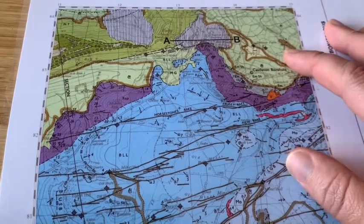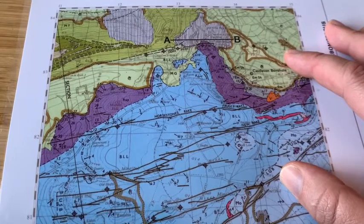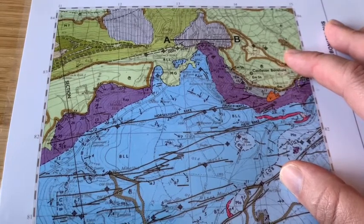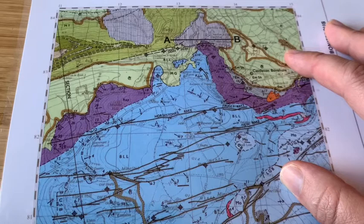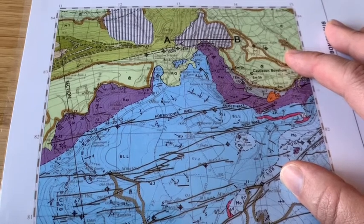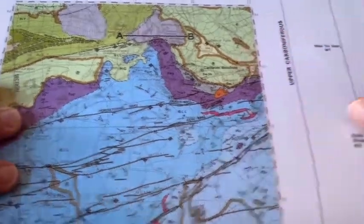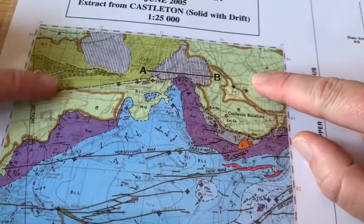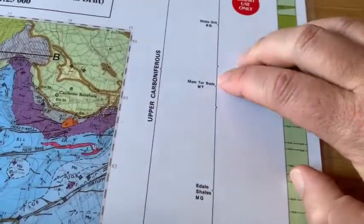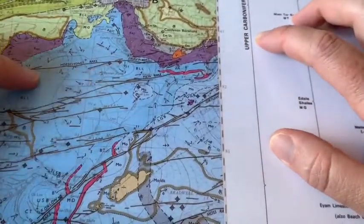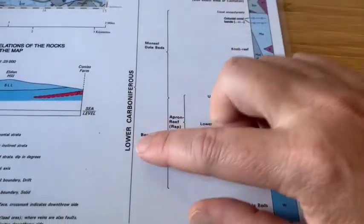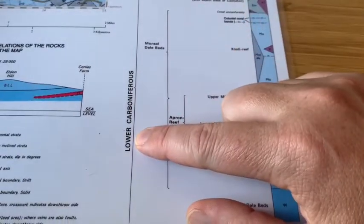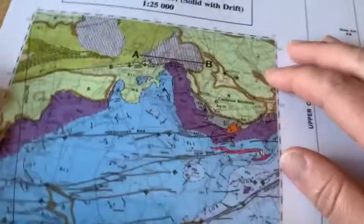The colours on the maps represent different rock formations, each dominated by a particular rock type of a particular age. The colours relate to the relative age of the rock. To find the age you go across the geological vertical column. Anything in this green colour at the top relates to the upper Carboniferous period, while anything in blue and purple is in the lower Carboniferous.